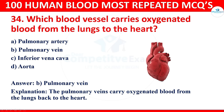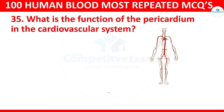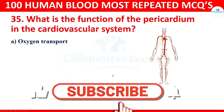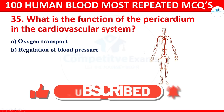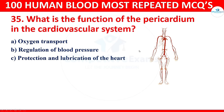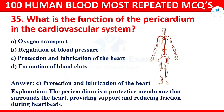Question 35: What is the function of the pericardium in the cardiovascular system? Options: oxygen transport, regulation of blood pressure, protection and lubrication of the heart, or formation of blood clots. The correct answer is protection and lubrication of the heart. The pericardium is a protective membrane that surrounds the heart, providing support and reducing friction during heartbeats.